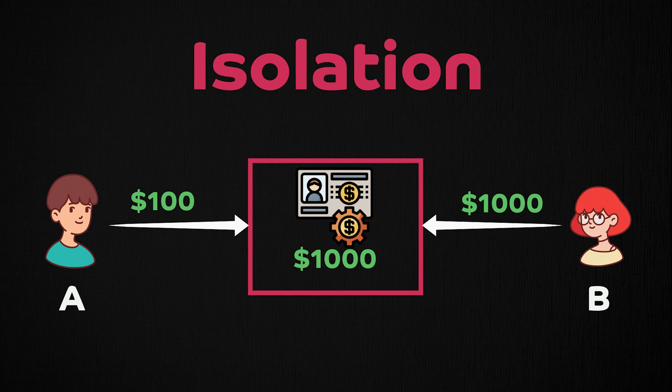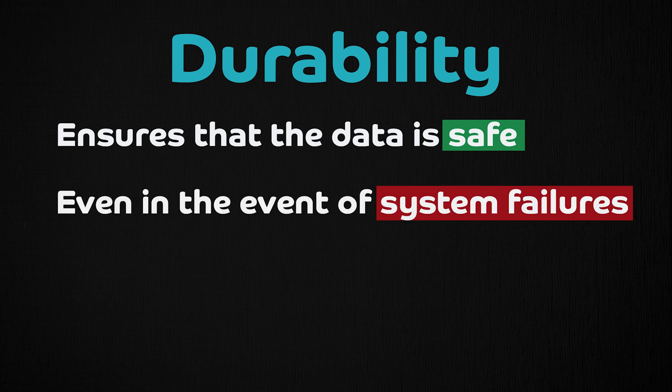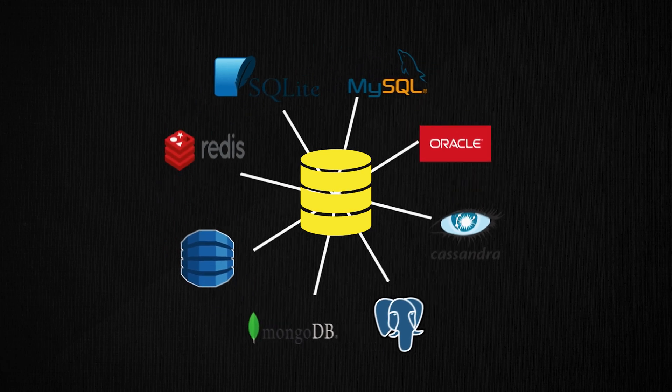In our example, only one person would be able to withdraw at one time. So let's say person B withdraws $1,000 from the account — now the account is at zero, so person A won't be allowed to withdraw $100. Finally, the fourth property, durability, ensures that once transactions are committed, they are persisted in non-volatile memory. It ensures that changes made by successfully executed transactions will be saved even in the event of a system failure. All major databases are ACID compliant.